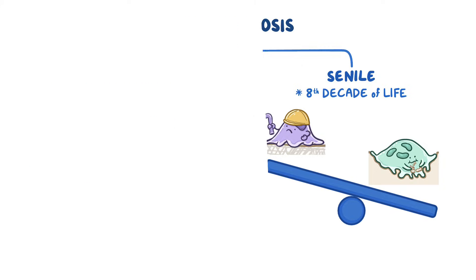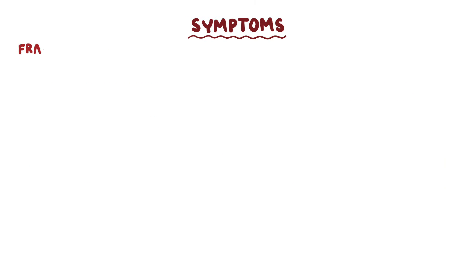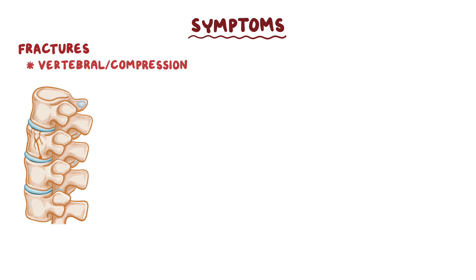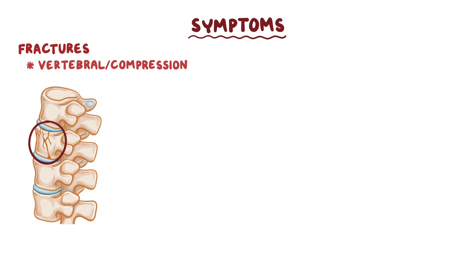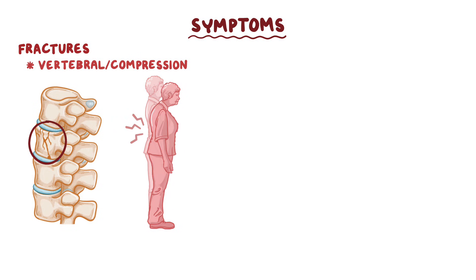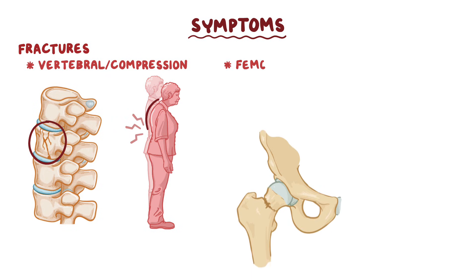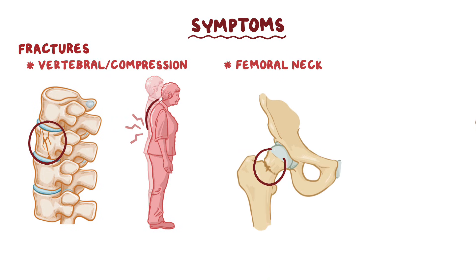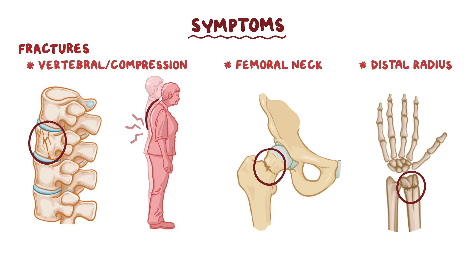People with osteoporosis don't usually have symptoms until a fracture occurs. The most common type of fracture is a vertebral fracture, also known as a compression fracture, which occurs when one or more bones in the spine weaken and shatter, causing back pain, height loss, and a hunched posture. Femoral neck fractures and distal radius fractures can also occur, and they're often associated with postmenopausal osteoporosis.